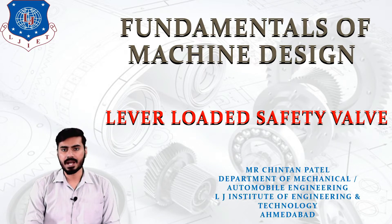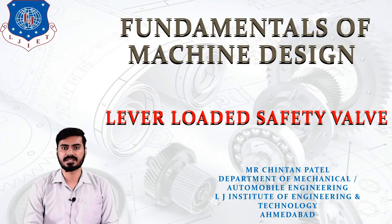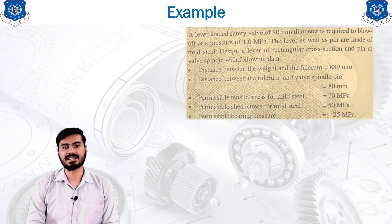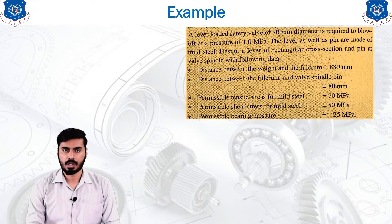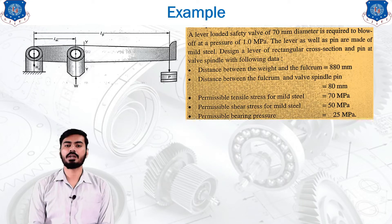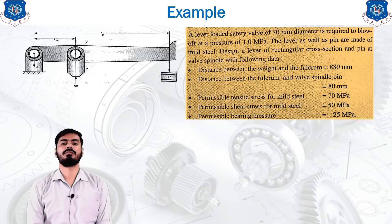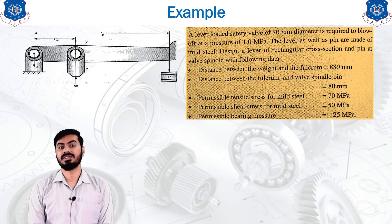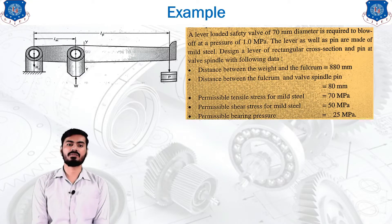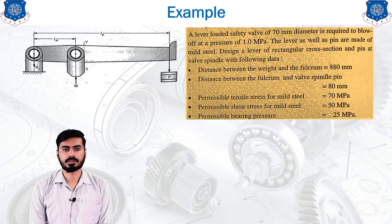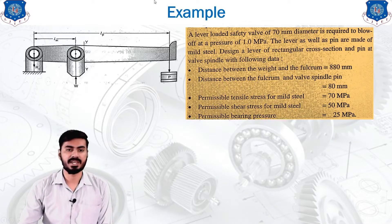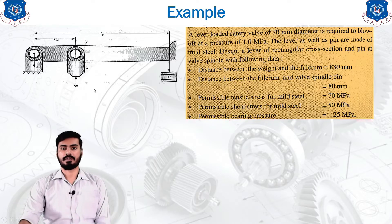In this particular lecture, we are going to learn the design procedure of the lever loaded safety valve. A lever loaded safety valve of 70 mm diameter is required to blow off at a pressure of 1 mega pascal. This is the pressure at which the lever is going to work — the maximum amount of pressure which is to be endured by the lever.